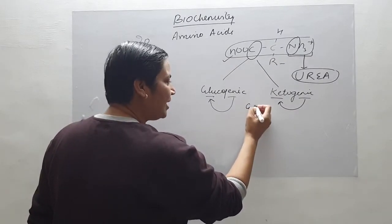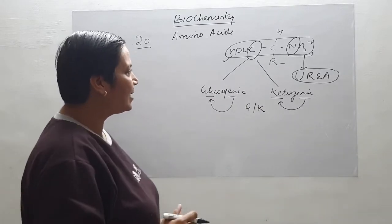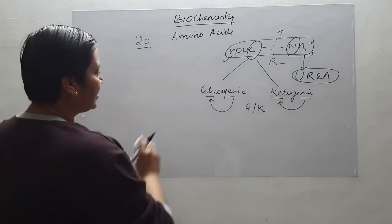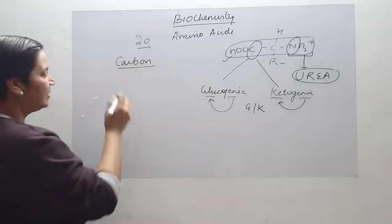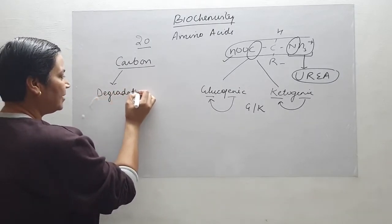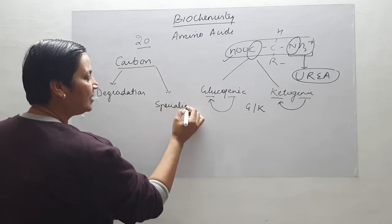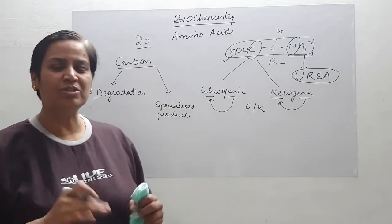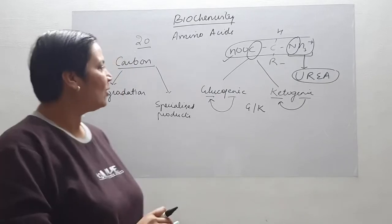There are certain amino acids which can be both glucogenic as well as ketogenic. Today we are going to study the metabolism of the carbon skeleton of amino acids, which has two segments: the degradation part, and the specialized products which are synthesized by a particular amino acid.